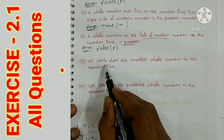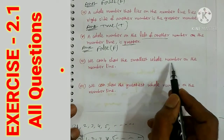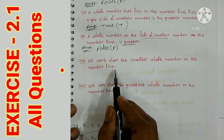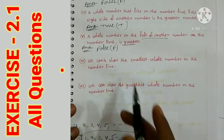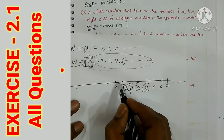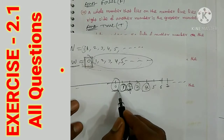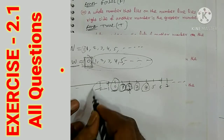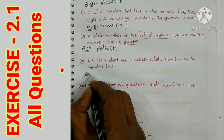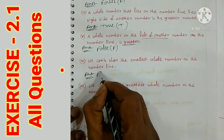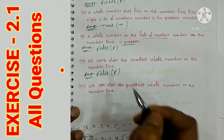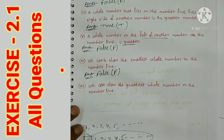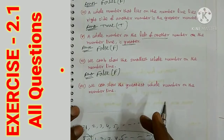Sixth bit: we cannot show the smallest whole number on the number line. On the number line, the smallest whole number is 0. However, to the left of 0 there are numbers like −1, −2, −3, which are not whole numbers. So we can show 0 on the number line — this statement is false.